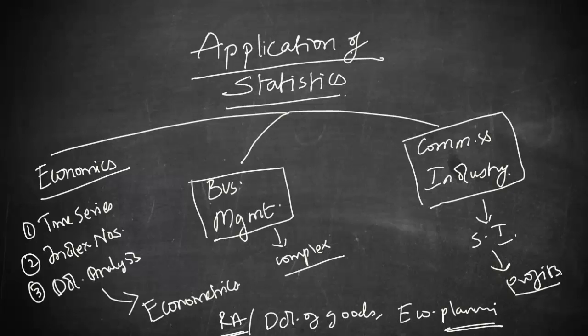So apart from this, they also make use of what is known as measure of central tendency, correlation, regression, time series, index number, sampling, etc. So there is a wide usage of statistics in commerce and industry. So it is widely used in accounting as well.